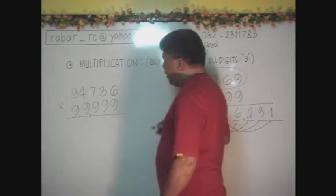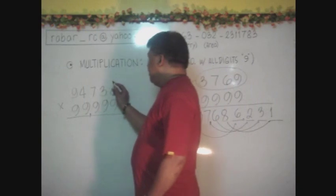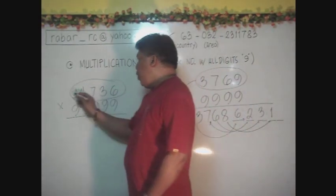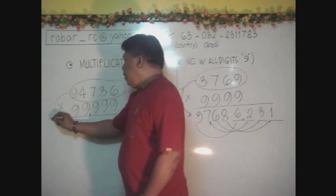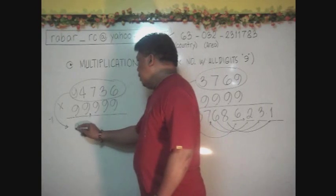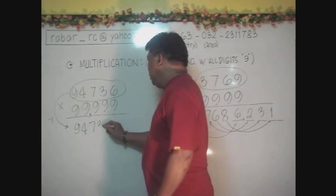If you multiply that, just refer it to our multiplicand. Then, minus 1. This will give you 94,735.